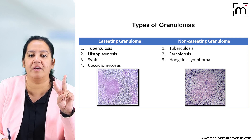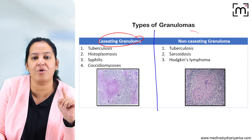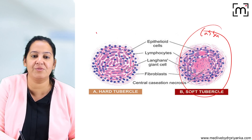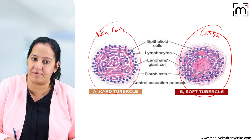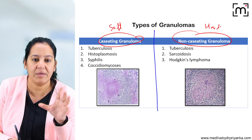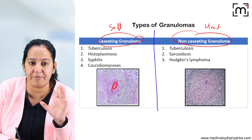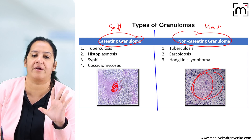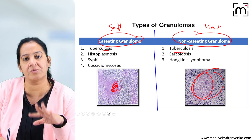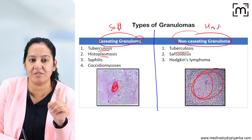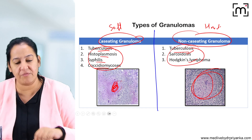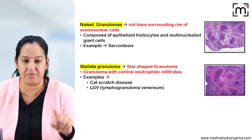Types of granuloma: there are two types — caseating granuloma and non-caseating granuloma. Caseating granuloma is the soft granuloma (caseous necrosis present at center); non-caseating granuloma is the hard granuloma (no caseous necrosis at center). TB appears in both. Tuberculosis, histoplasma, syphilis, and coccidioidomycosis are seen in caseating granuloma. TB, sarcoidosis, and Hodgkin's lymphoma are examples of non-caseating granuloma.